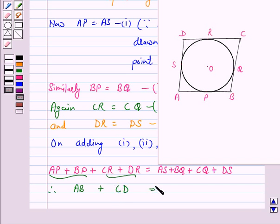is equal to AS plus DS is equal to AD and BQ plus CQ is BC.